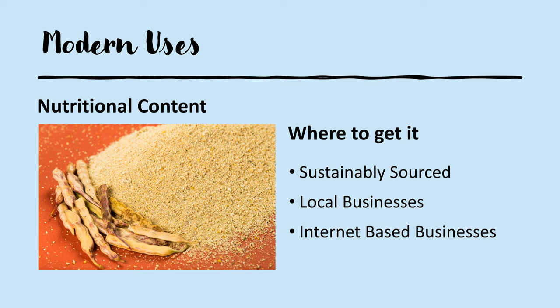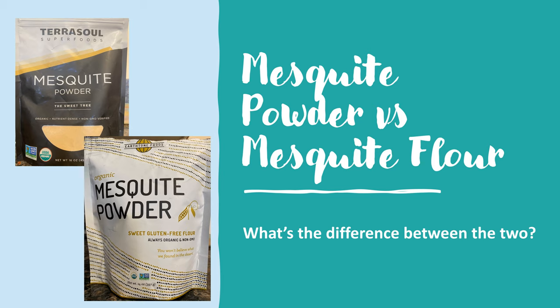I strongly encourage you not to collect any mesquite you find in the desert — it's an important food, nesting, and shelter resource for a variety of animals, including some of our protected species. You can find sustainably harvested organic mesquite through local health food stores or on Amazon. You can also support MDLT through Amazon Smile, though I would encourage you to shop local when possible. Mesquite flour is made by using the entire pod, while mesquite powder uses only the seeds — you can tell them apart by color, as flour looks much darker. Both provide that rich, nutty flavor.